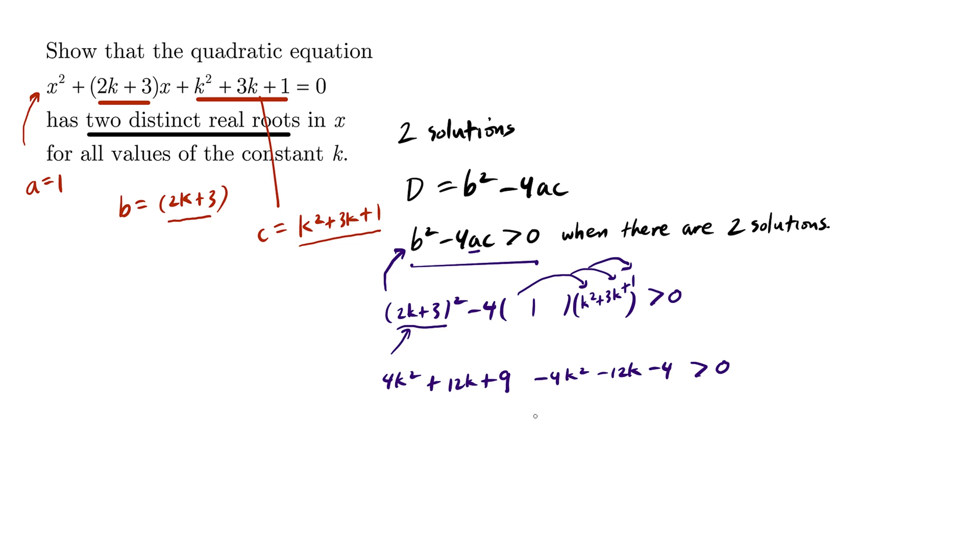We're just going to clean this up a little bit. 4k squared cancels out with negative 4k squared. 12k cancels out with negative 12k. And so what we have is 9 minus 4, which is 5.